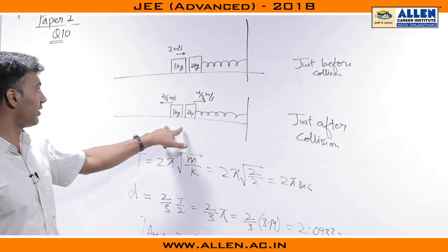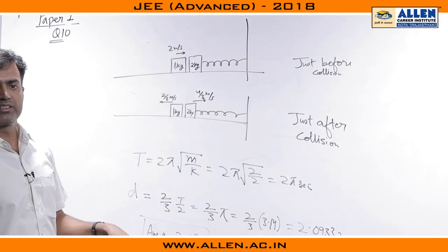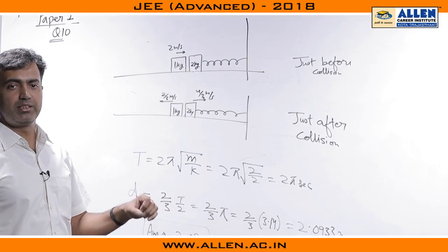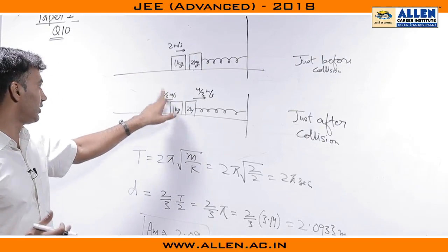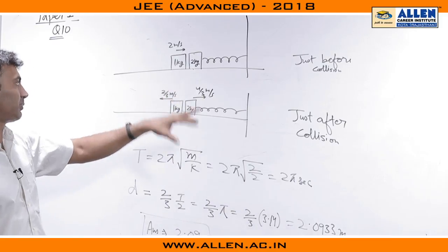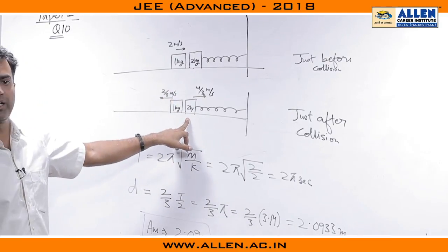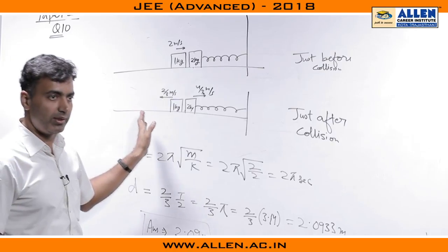So, before collision and just after collision, we could apply ideas of momentum conservation and definition for E. We come to the conclusion that after the collision, the 1 kg body reverts back with speed of 2 by 3 meters per second, and the 2 kg block moves at 4 by 3 meters per second in the forward direction.